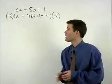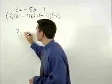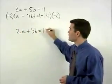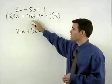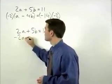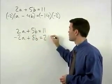Rewriting both equations, we have 2a plus 5b equals 11. And for our second equation, we have negative 2a plus 8b equals 28.